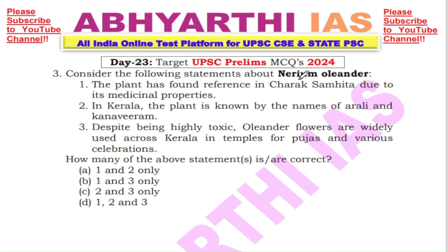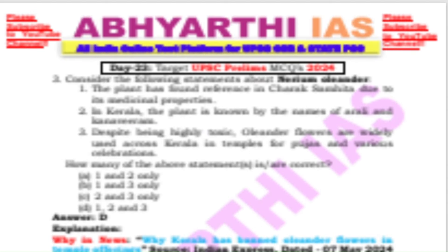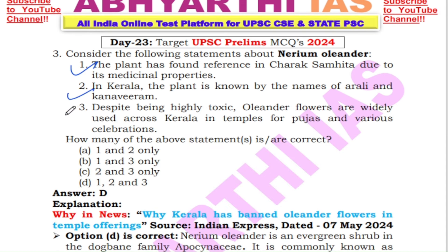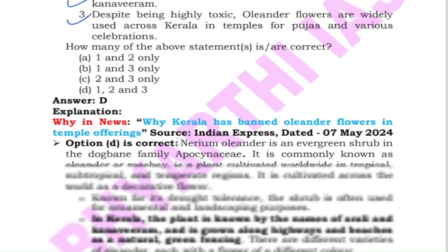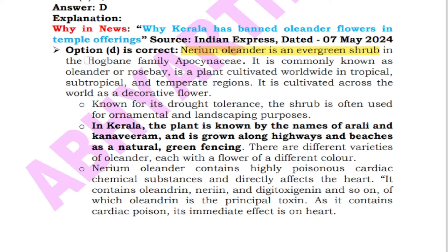Next question: Consider the following statements about Nerium oleander — 1) The plant has found reference in Charak Samhita due to its medicinal properties. 2) In Kerala, the plant is known by the names Arali and Kanna Veeram. 3) Despite being highly toxic, oleander flowers are widely used across Kerala in temples for pujas and various celebrations. How many statements are correct? The answer is D — all three statements are correct. Recently, the Kerala government has banned oleander flowers in temple offerings. Nerium oleander is an evergreen shrub belonging to the Dogbane family Apocynaceae, commonly known as oleander or rose bay, cultivated worldwide in tropical, subtropical and temperate regions.